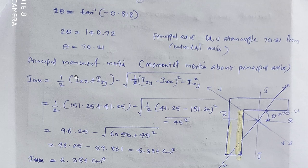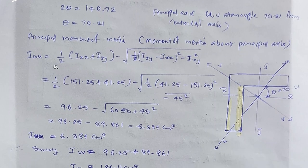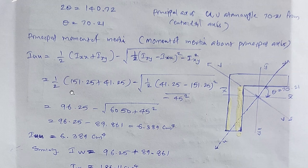The principal moments of inertia are: IUU = (1/2)·(Ixx + Iyy) − √[(1/2·(Iyy − Ixx))² + Ixy²], and IVV = (1/2)·(Ixx + Iyy) + √[(1/2·(Iyy − Ixx))² + Ixy²]. Substituting the values gives IUU and IVV equal to 6.389 cm⁴ (and the other principal value). These are the principal moments of inertia.